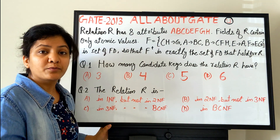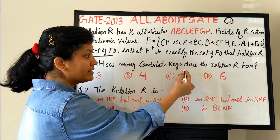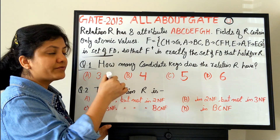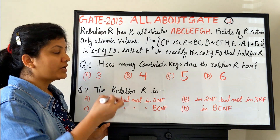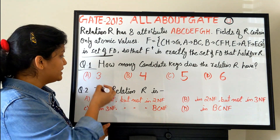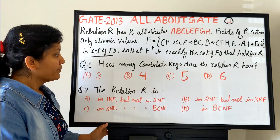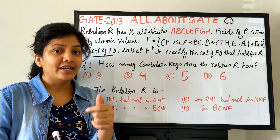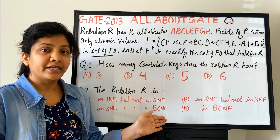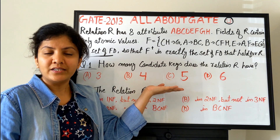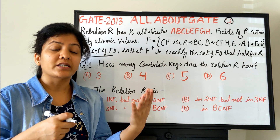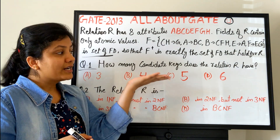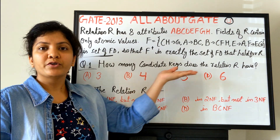The first question is: how many candidate keys does relation R have? It is not asking what the candidate keys are, but how many. This could appear as a numeric answer type question in today's GATE exam. The second question is: which normal form is the relation R in? To find the normal form, the first step is finding all candidate keys — so you know the key attributes, non-key attributes, partial dependencies, transitive dependencies, and BCNF violations.